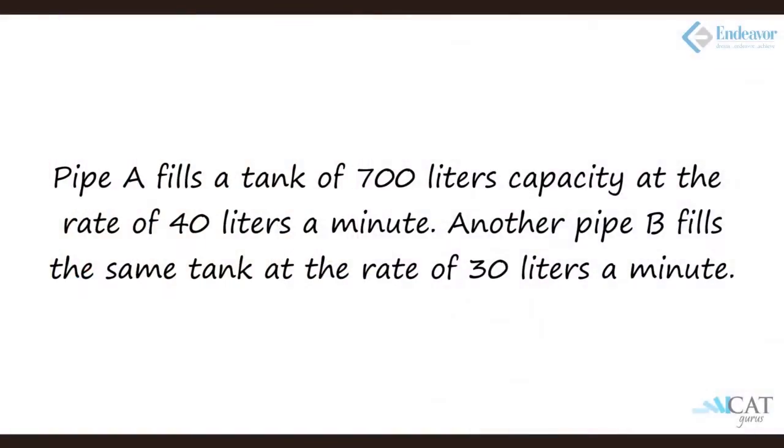Pipe A fills a tank of 700 liters capacity at the rate of 40 liters a minute. Another pipe B fills the same tank at the rate of 30 liters per minute. This question is slightly different. We know the capacity of the tank. In all the previous questions we didn't know what is the quantity of work done in any units - maybe hours, maybe liters, or any other medium that we can measure. Here we are given that.